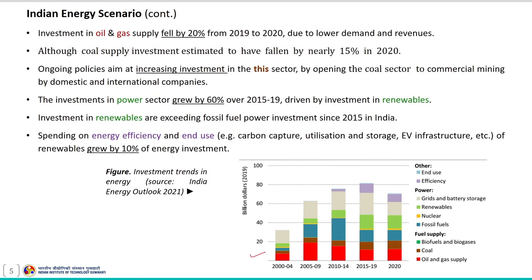The schematic here gives information about the investment trend in energy in India. Oil and gas supply investment fell by around 20 percent from 2019 to 2020, mainly due to lower demand, prices, and revenues. Although coal supply investment is estimated to have fallen by 15 percent in 2020, ongoing reforms aim to increase investment in this sector by opening coal to commercial mining by domestic and international companies.